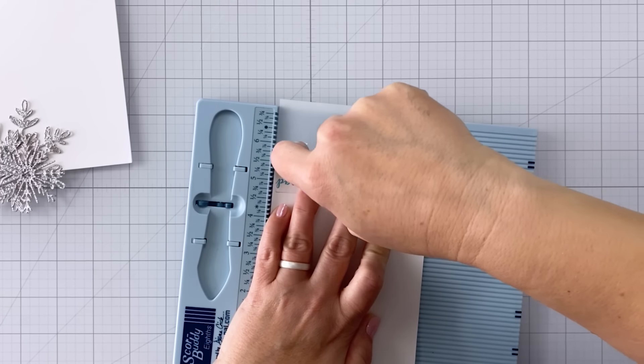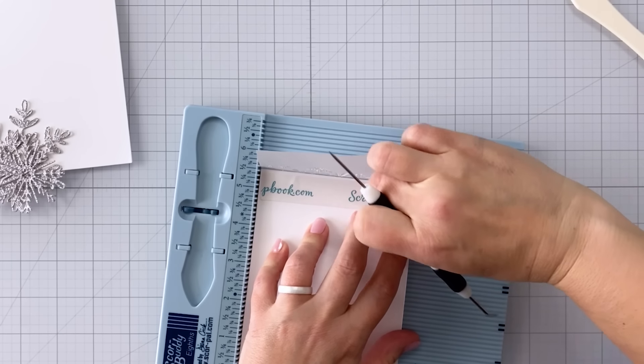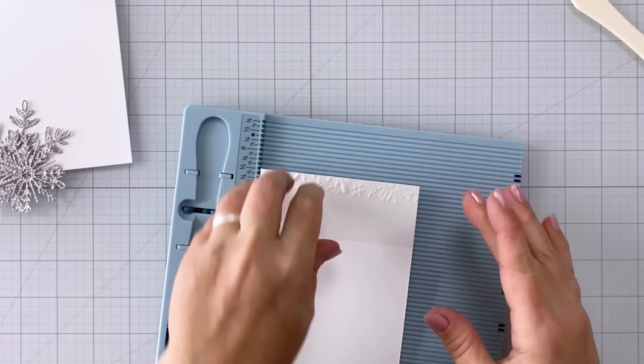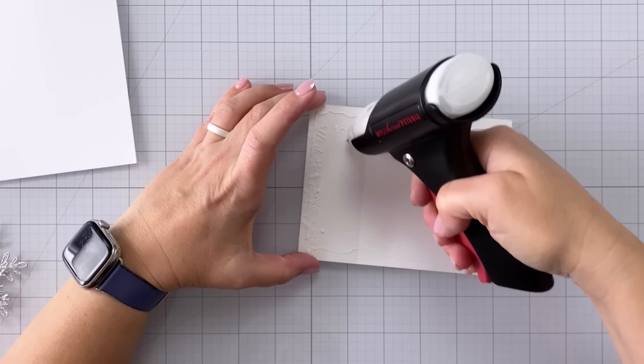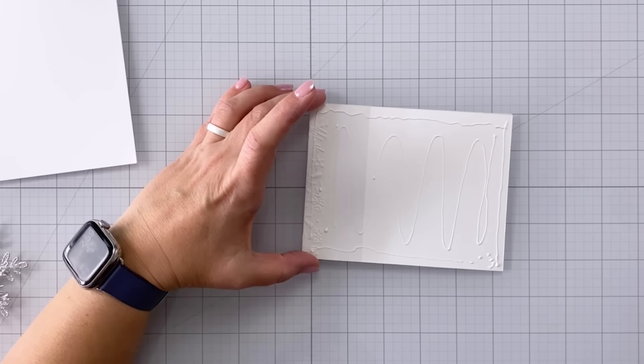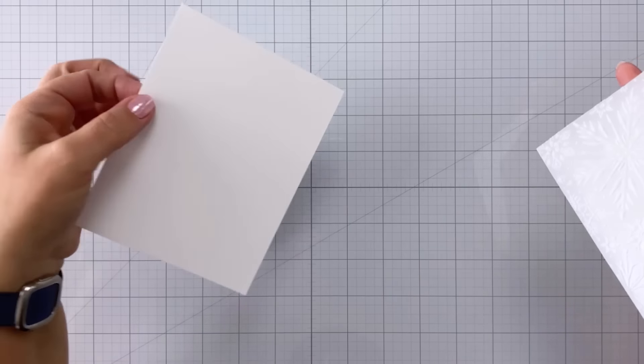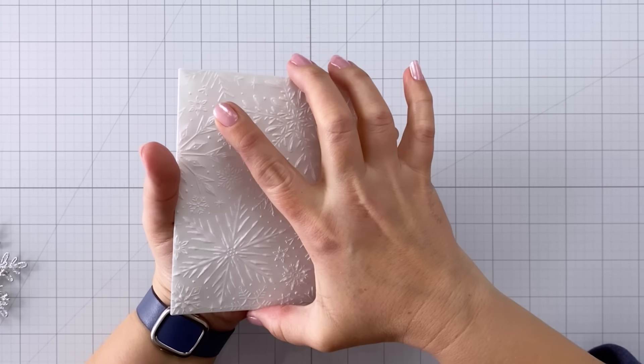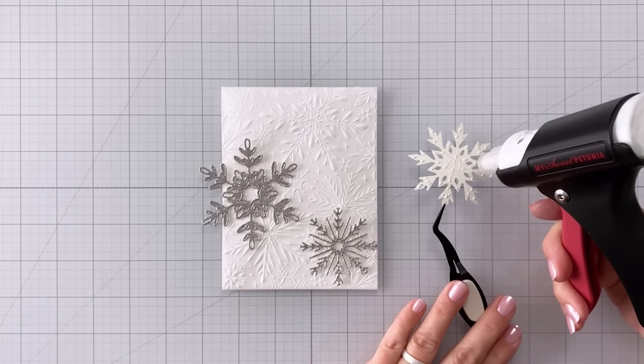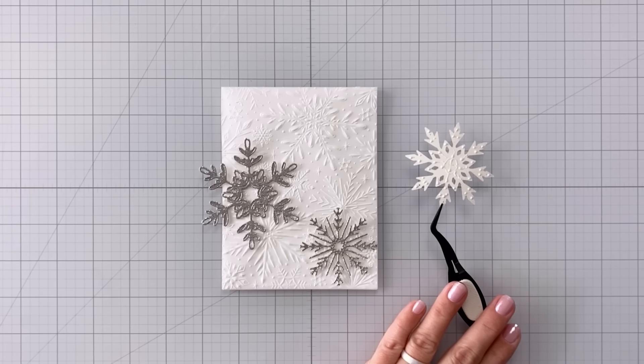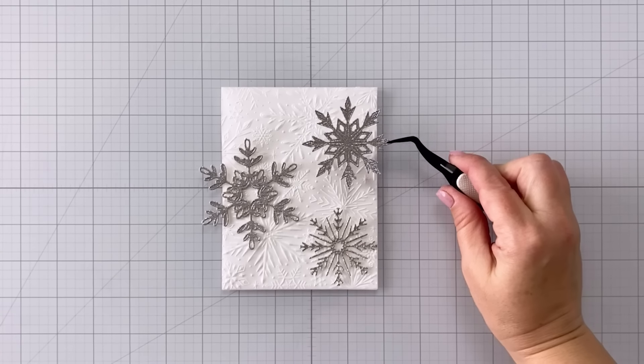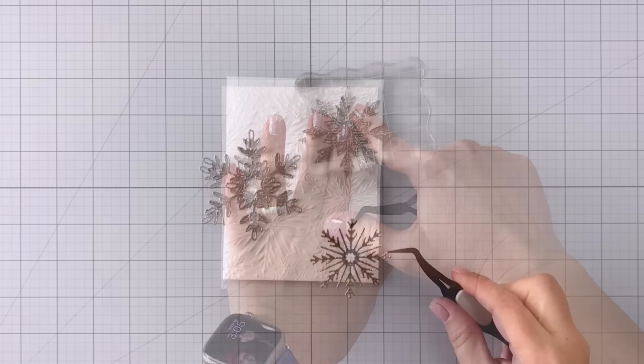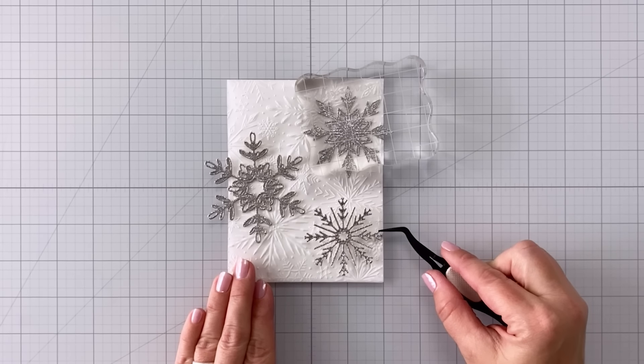Now you could do this as well with acetate but I generally prefer to score the acetate first before I run it through my embossing folder because I find that sometimes it can be a little hard to score and fold it in the right spot once it's already been run through with an embossing folder. I'm going to go ahead and glue the entire piece to my card base. Now on both of these cards I chose to do a top folding card base but you could also create a side folding card and just adhere your vellum or your acetate in the same way but do it on the side.